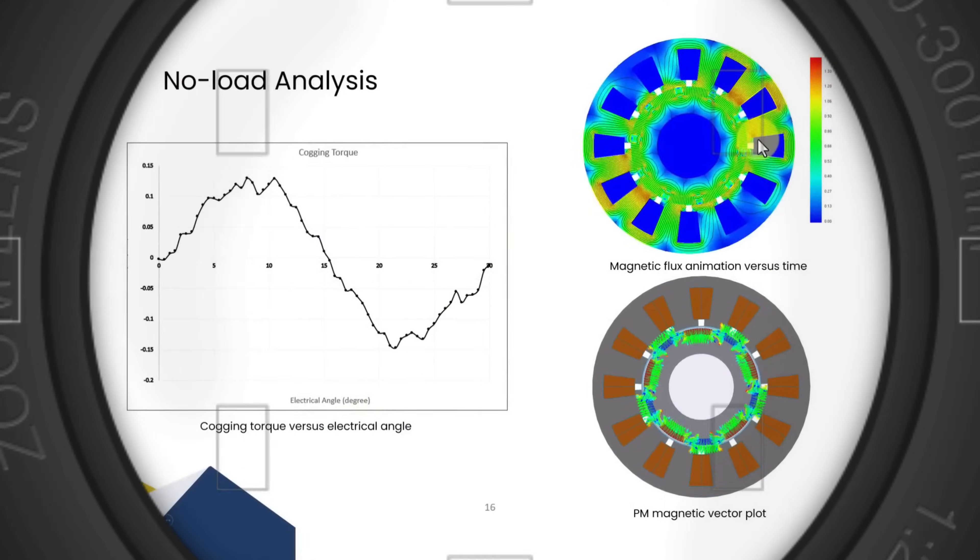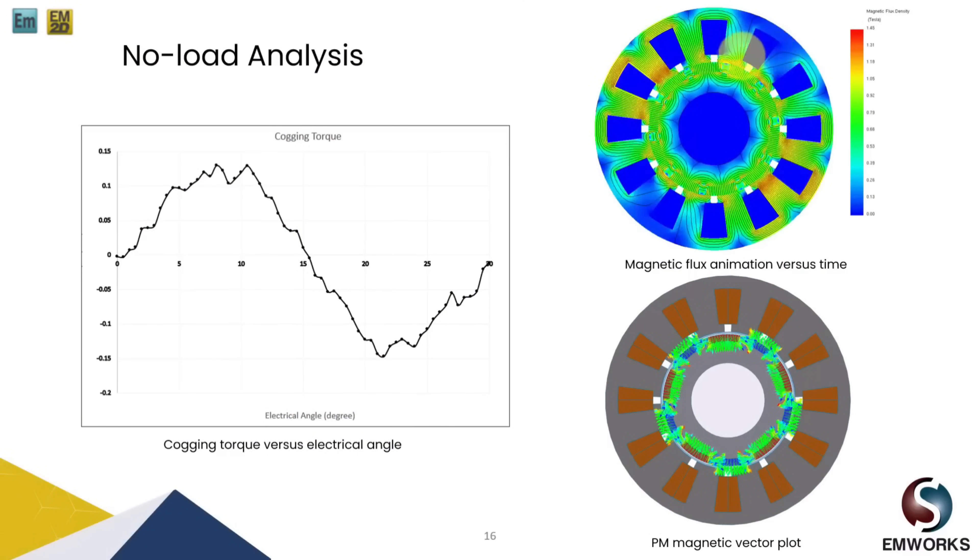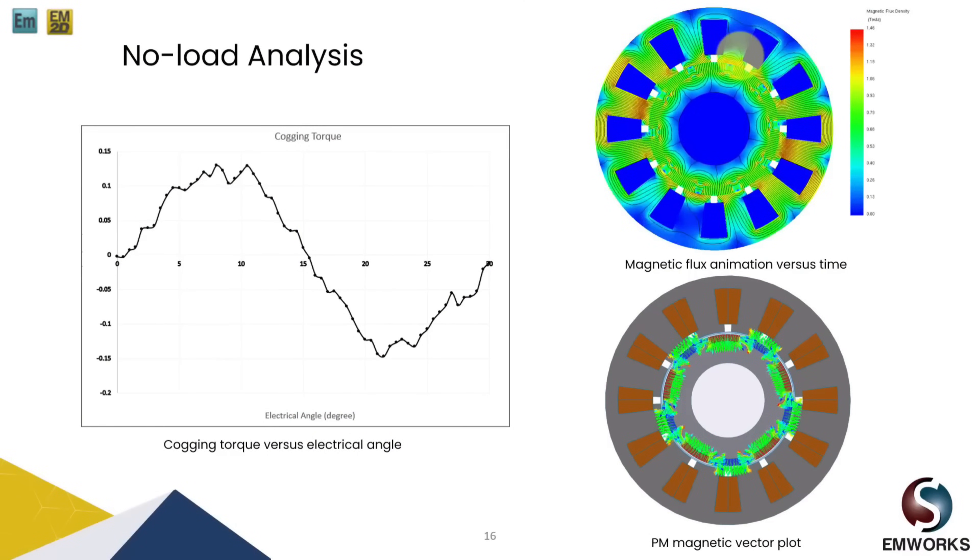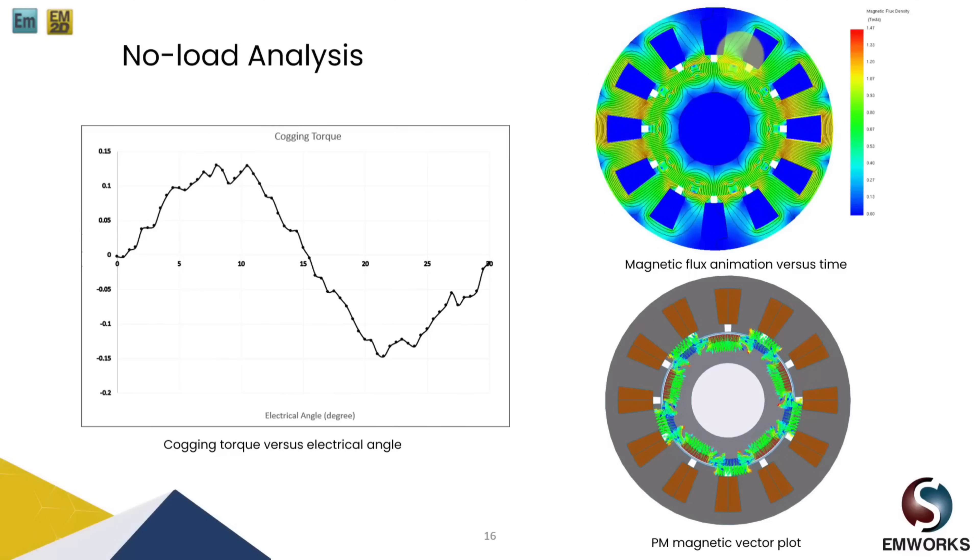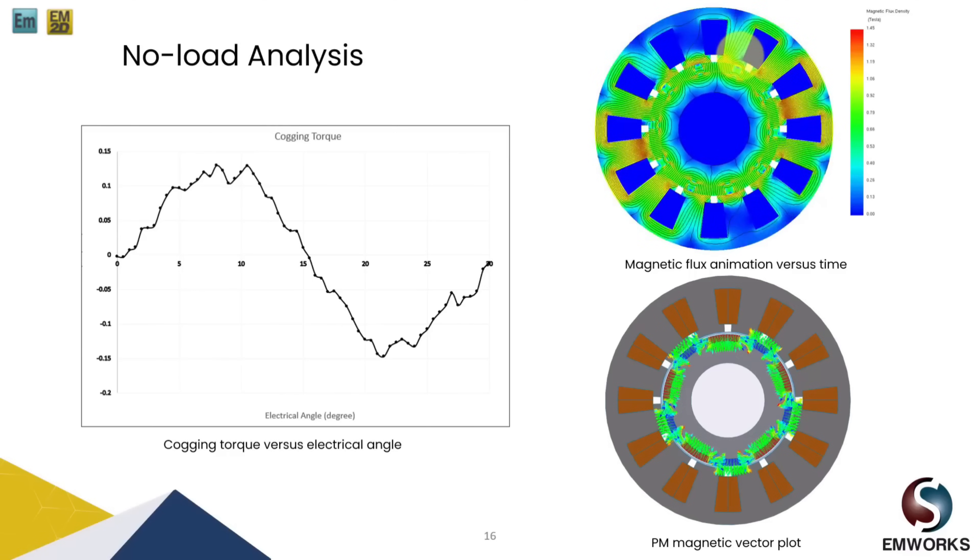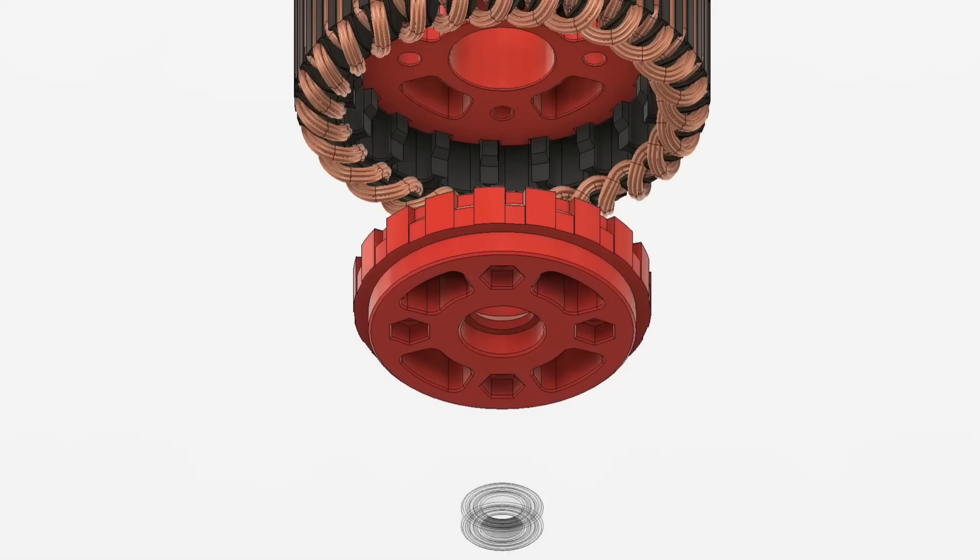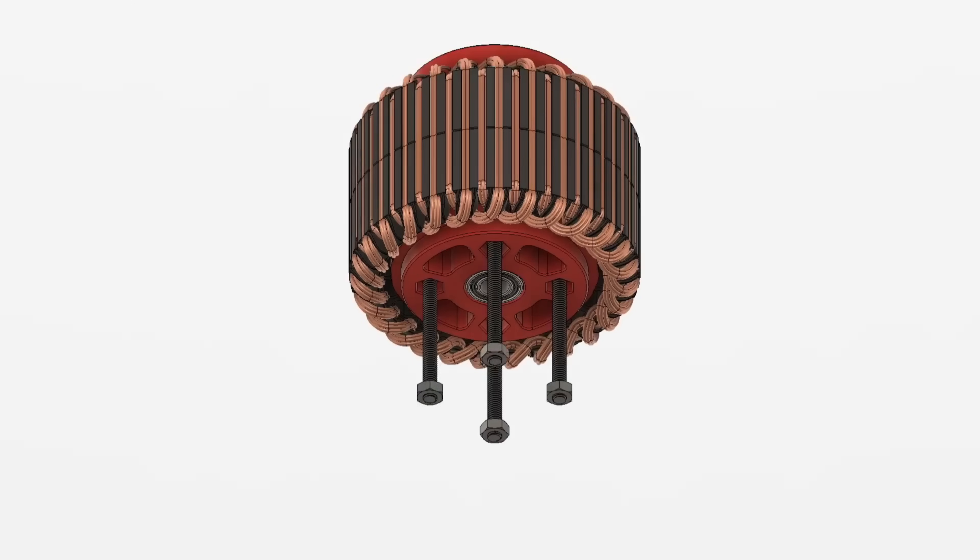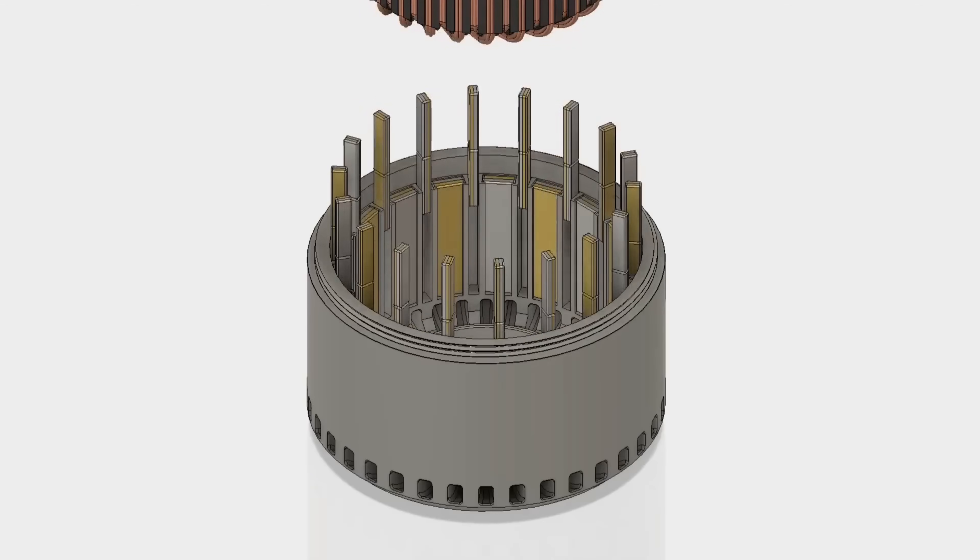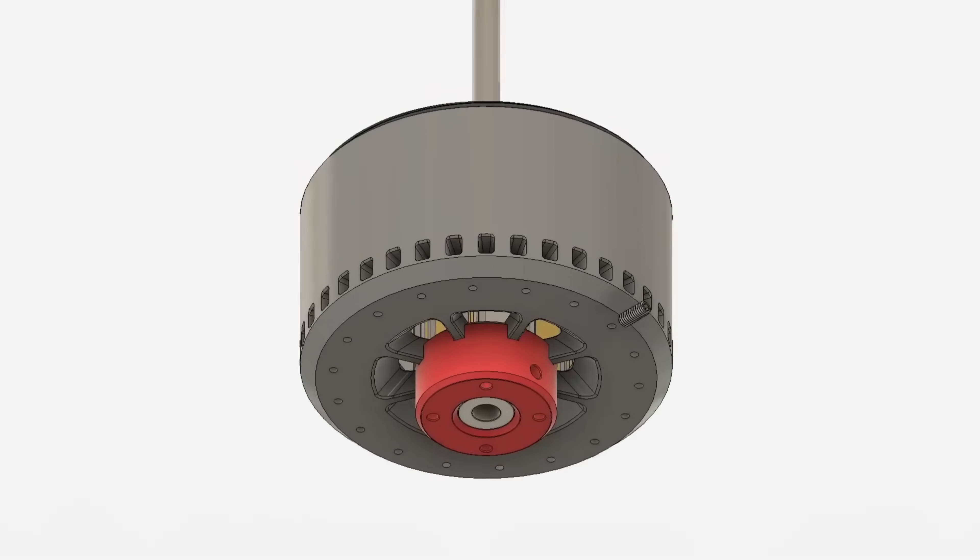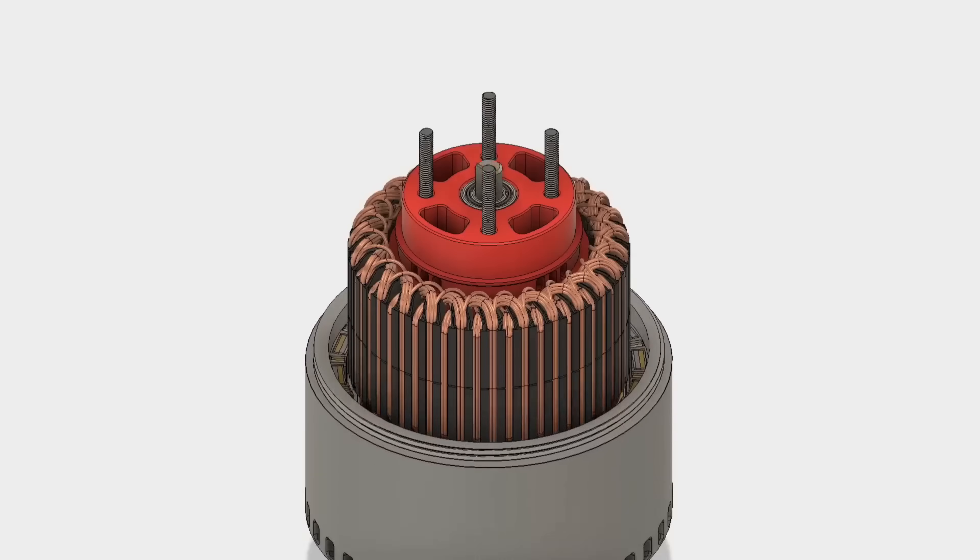Although this concept is not entirely new, it is worth noting that these motors are more complex to build and experience higher heat dissipation. The ideal Hallback Array motor eliminates the need for laminations or back iron, resulting in reduced hysteresis losses and overall motor weight. Additionally, it enables reaching very high RPS.